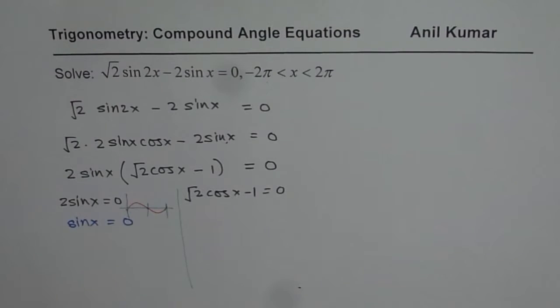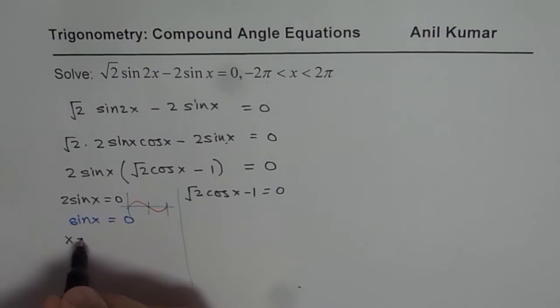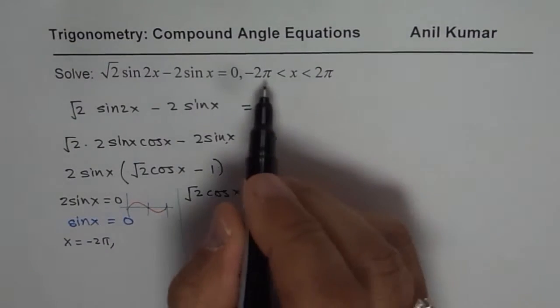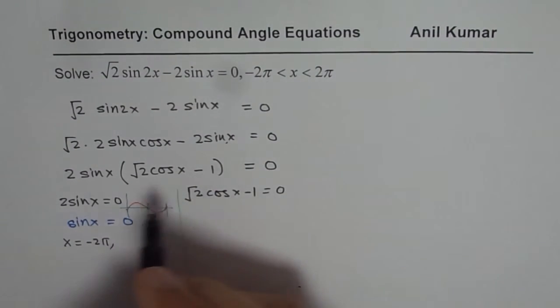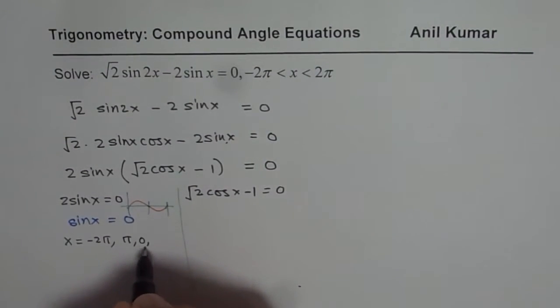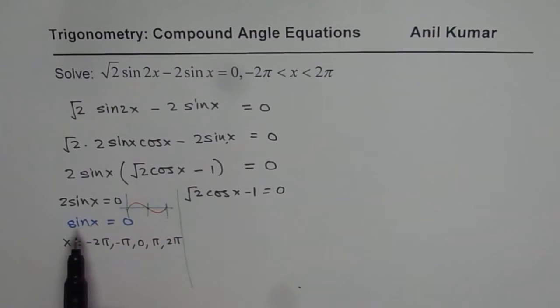So we have x values which should be equal to -2π within this domain, right? -2π, -π, 0, π and 2π, correct? So these are all the solutions for sin x = 0. That is one part.